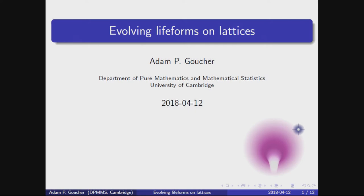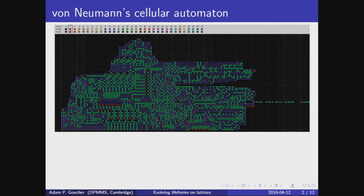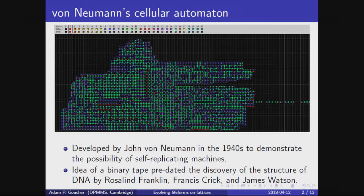Signals pass along the red and blue arrows, and the green diamonds function as AND gates, signal splitters, and wire crossings. It copies and reads a tape. DNA uses base 4, and modern computers use base 2, but this self-replicator by William R. Buckley and me uses a base-3 tape.